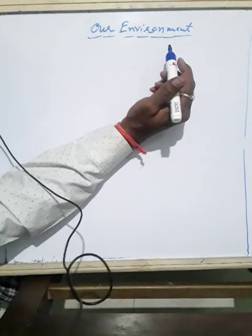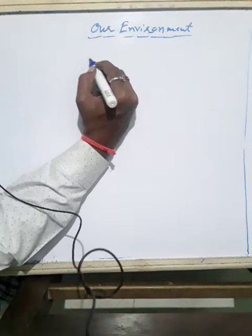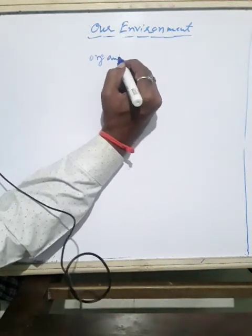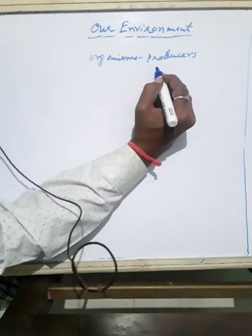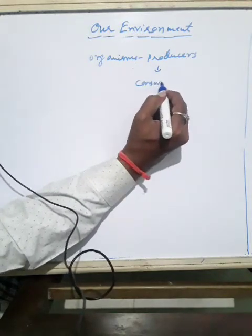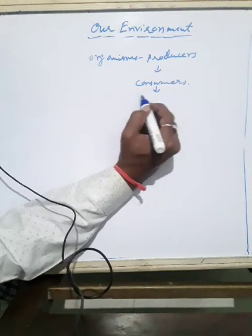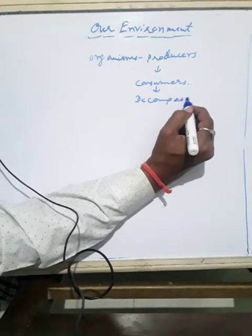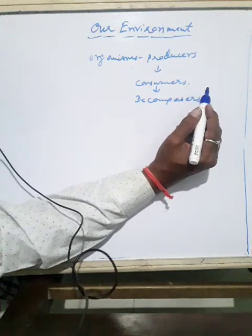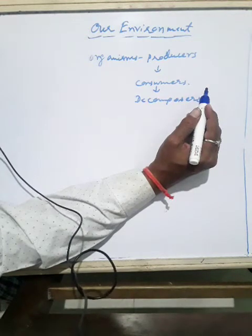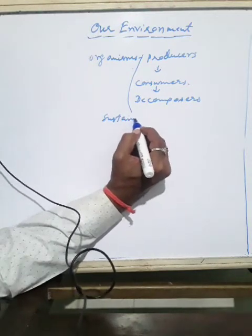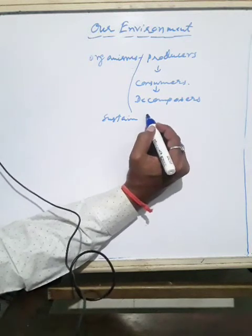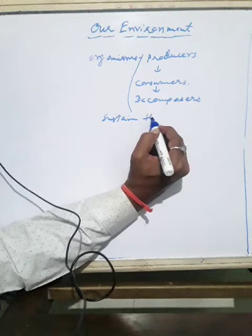In earlier classes, we learned that organisms can be grouped into three types: producers, consumers, and decomposers. All of them are interrelated to each other according to the manner in which they obtain their sustenance from the environment.